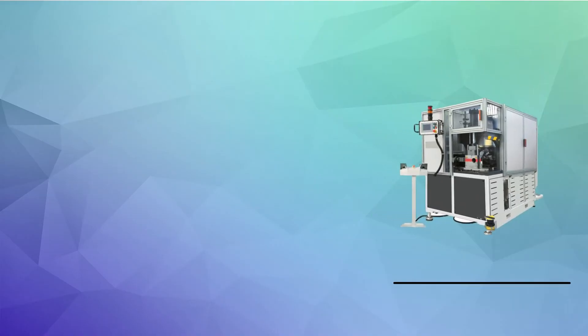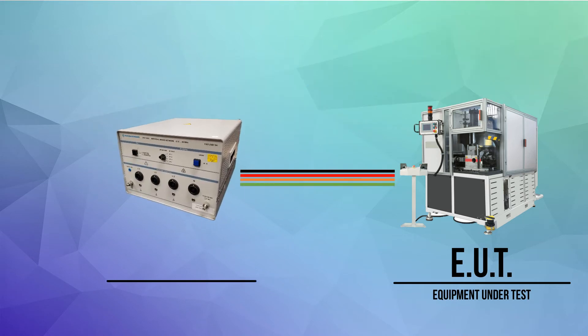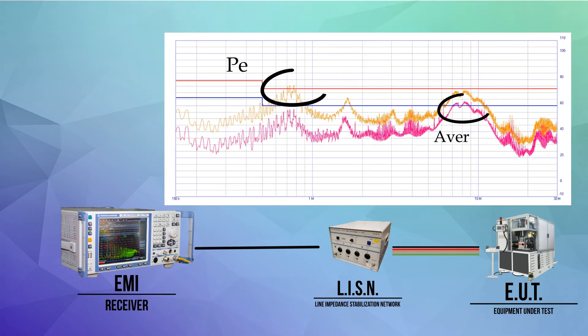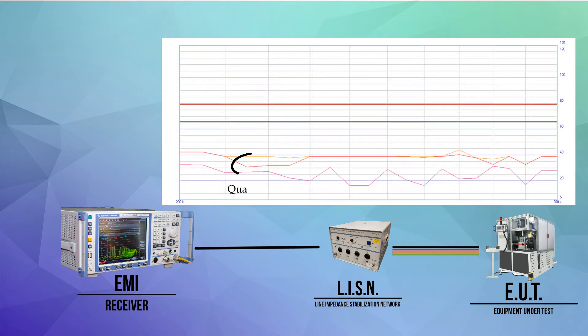When doing a conducted emissions test, the equipment under test, or EUT, is connected to power through a line-impedance stabilization network. This LISN allows the test engineer to measure the noise levels through an EMI receiver. Measurements are taken of the peak and average values from 150 kHz to 30 MHz and compared against quasi-peak and average limit lines.